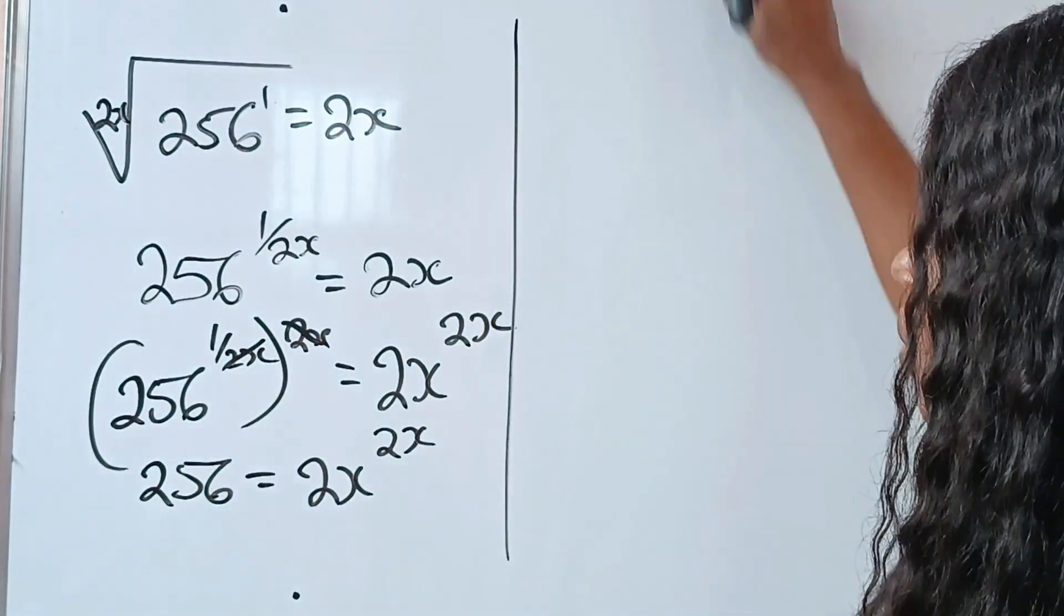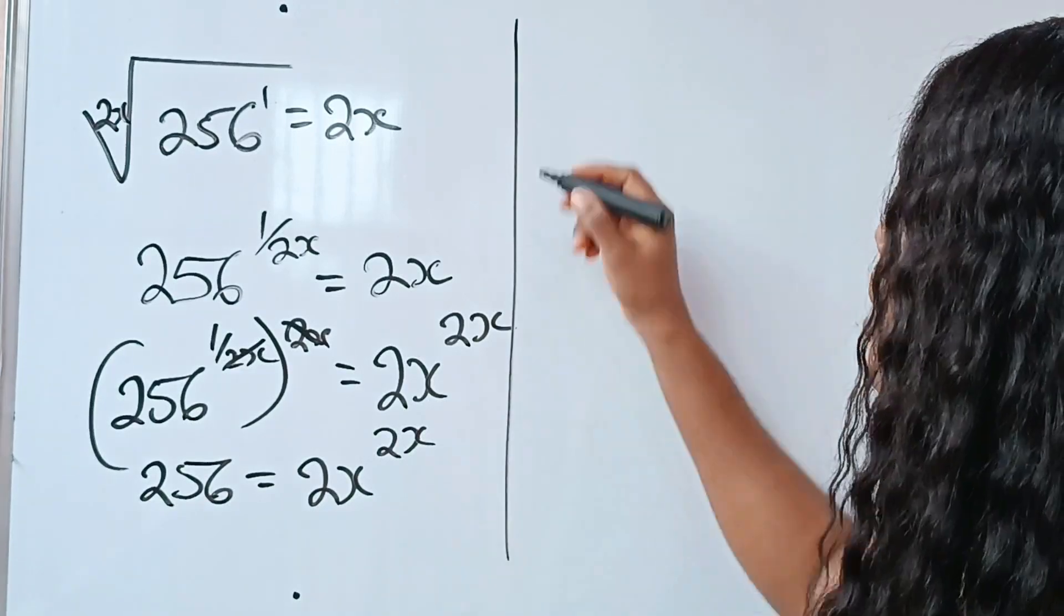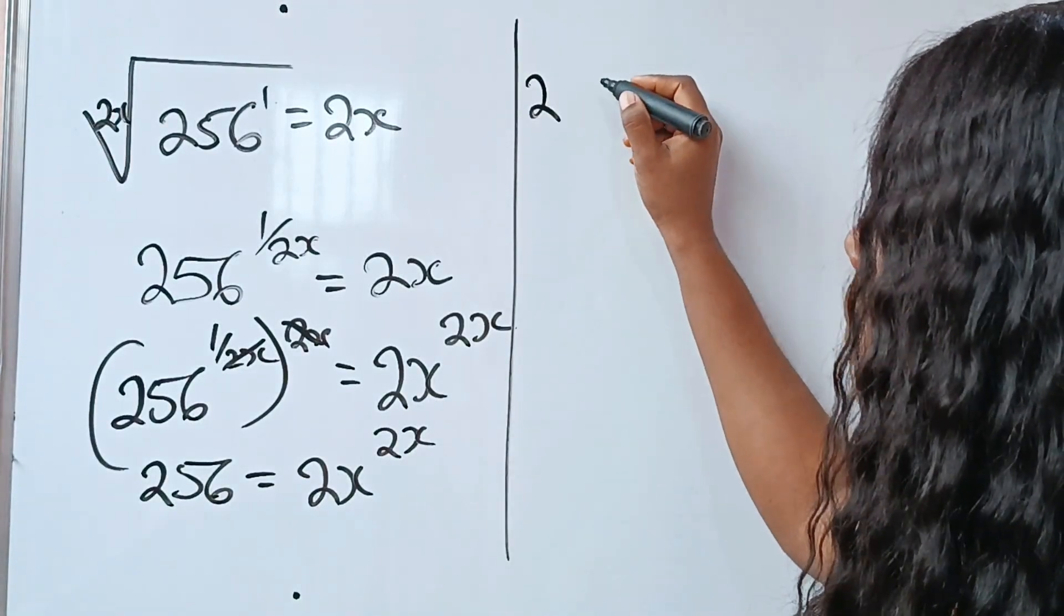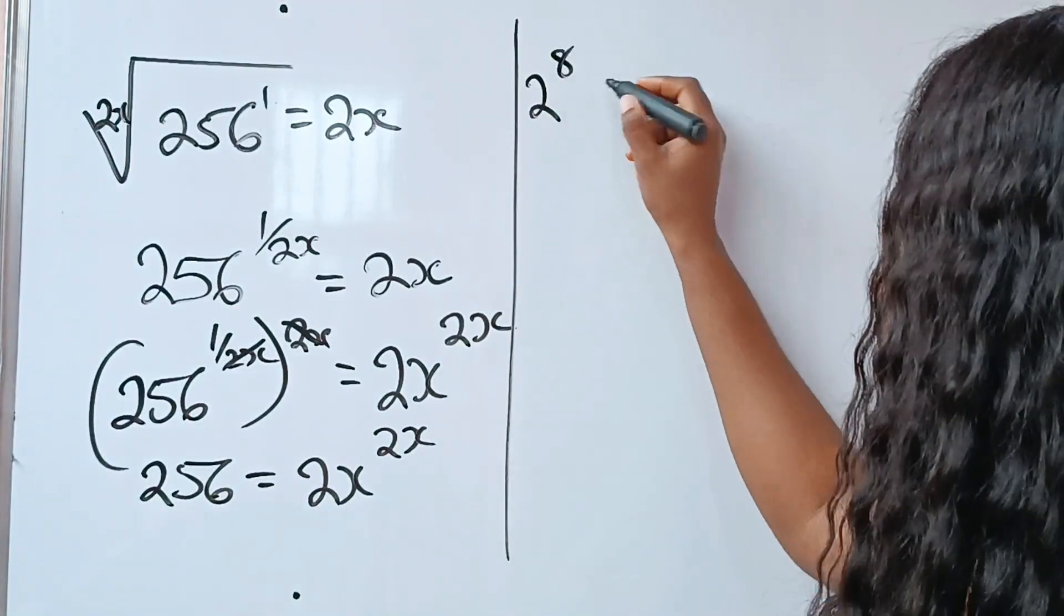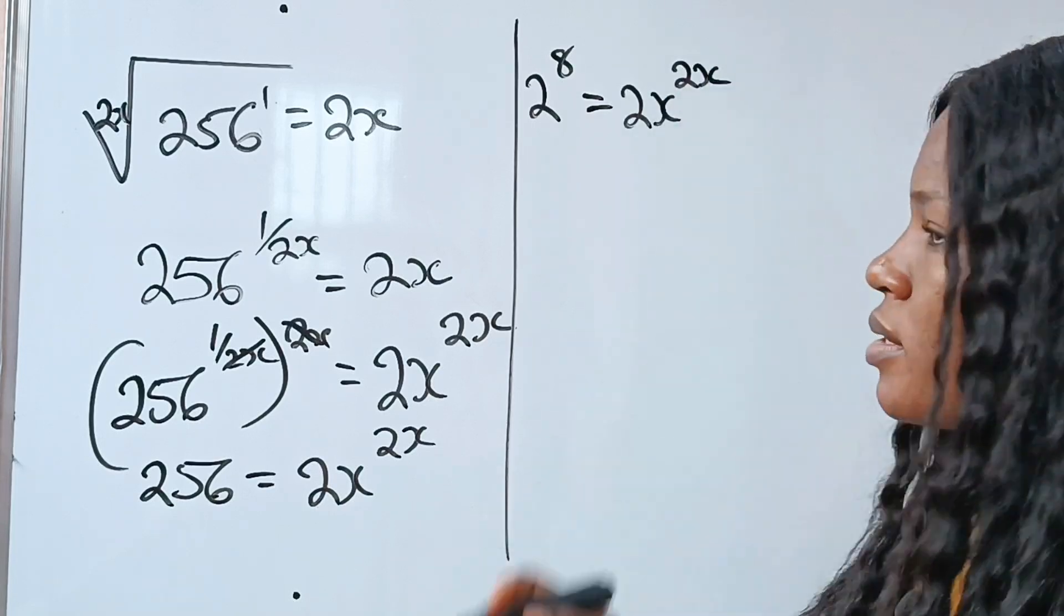Now, we continue. 256 can be written as 2 to the power of 8. So this is equal to 2x to the power of 2x.